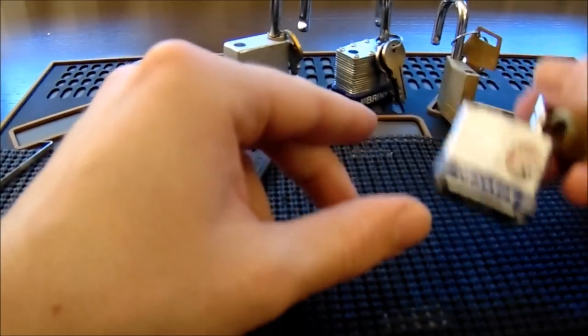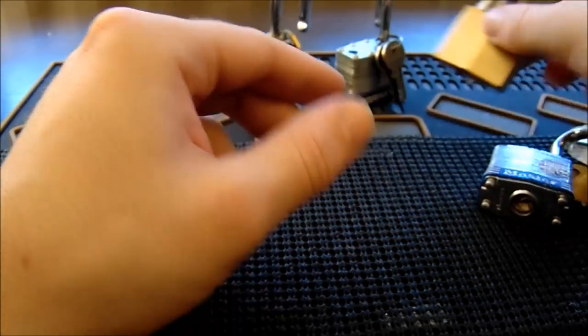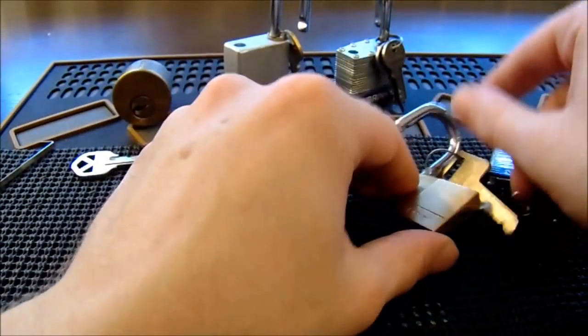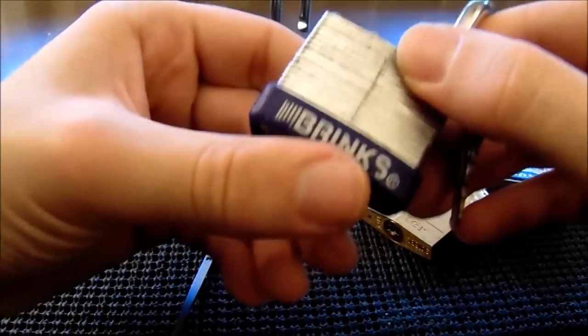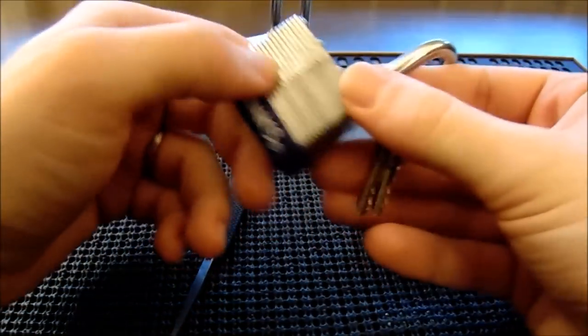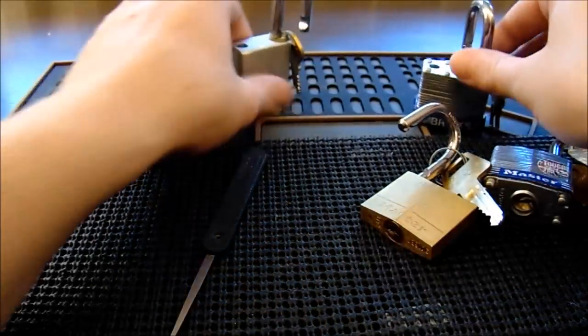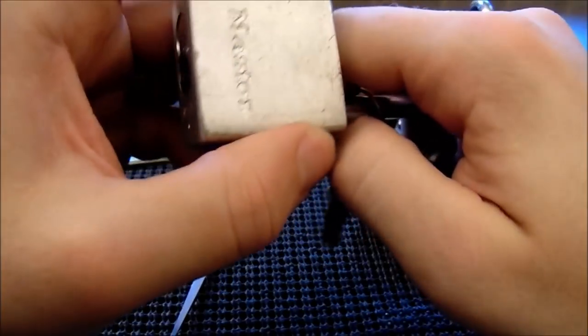Followed by the Master Lock model number 140, which is the third lock. The Brinks 40 millimeter padlock, which is the fourth lock on my progressive lock list. And then the Master Lock model number 570, which is the fifth lock on my progressive lock list.